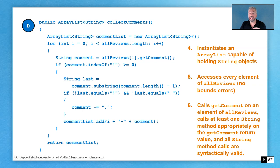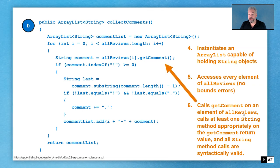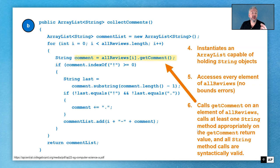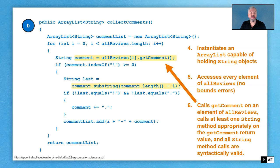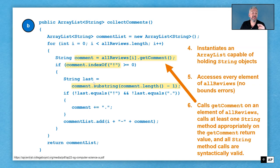Point number six says a lot of different things. It says we call getComment on an element of allReviews, which we do, but it also says we have to call at least one string method appropriately on the getComment return value. We do several: we call substring, we call comment.length, and we call comment.indexOf. So in this case we did three — we need at least one. It also says that all of the string method calls are syntactically valid, and in this case all of them are 100% correct.